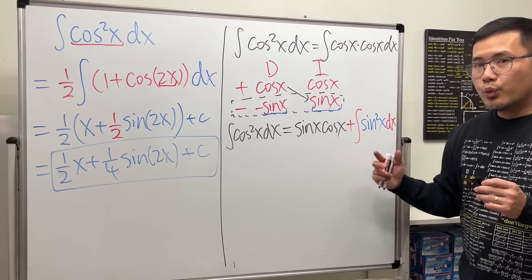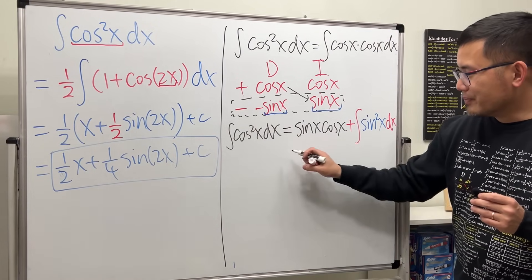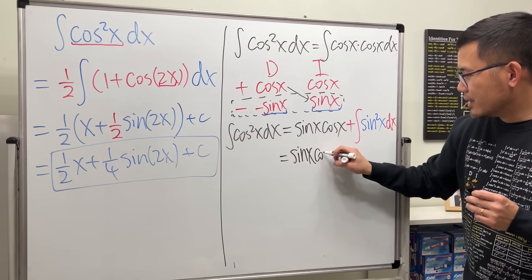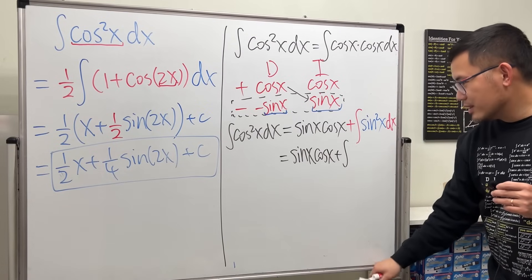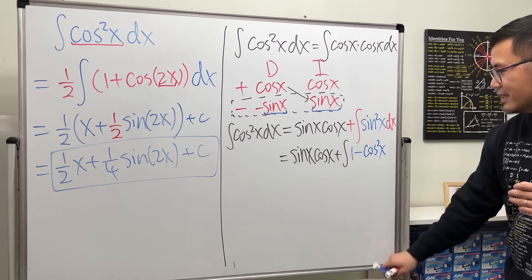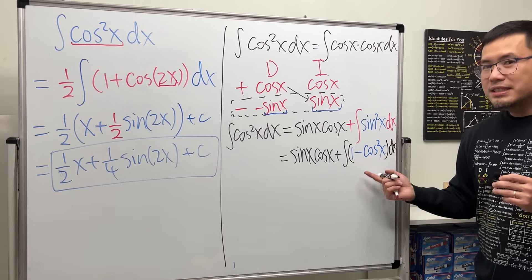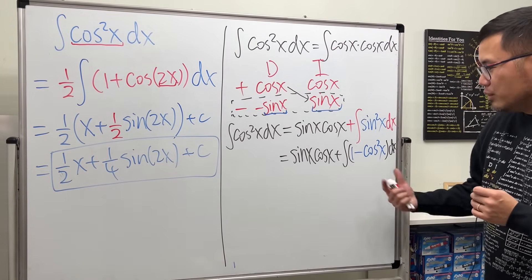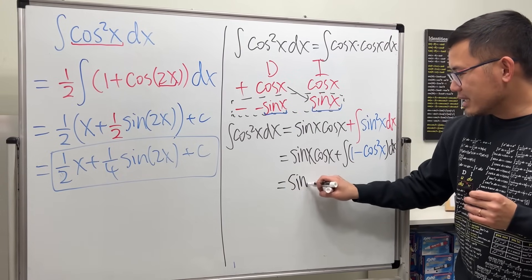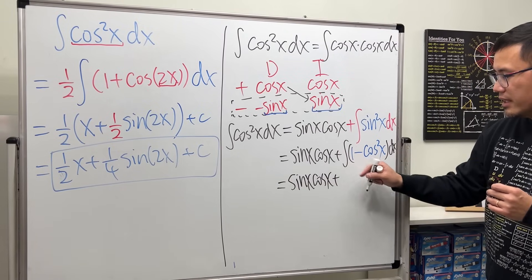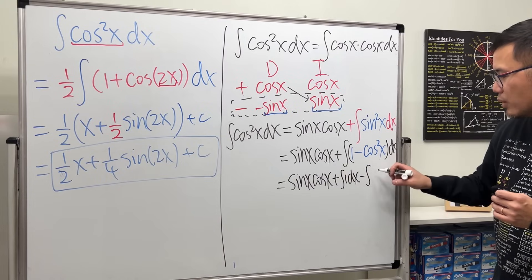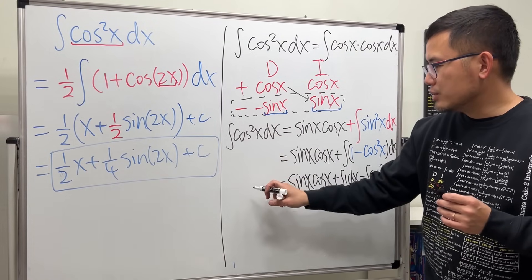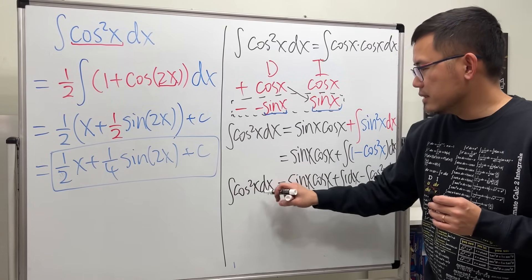This doesn't look the same, but now for sine squared x we can use the Pythagorean identity. So the integral of cosine squared x equals sine x cosine x plus the integral of (1 minus cosine squared x). People are less upset about this identity. Breaking them apart: we still have sine x cosine x plus the integral of 1 dx minus the integral of cosine squared x dx. This is the repeating case — the left side still has the integral of cosine squared x.